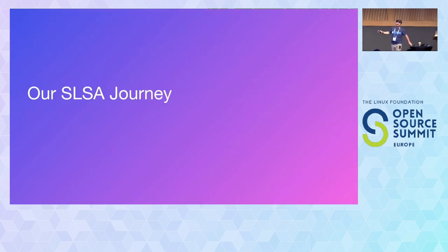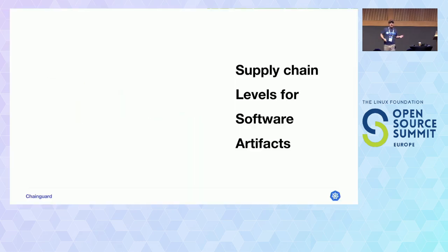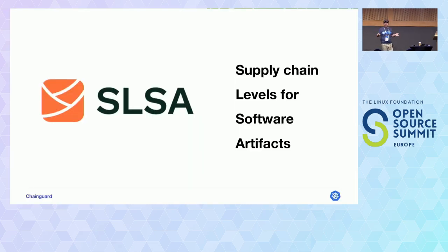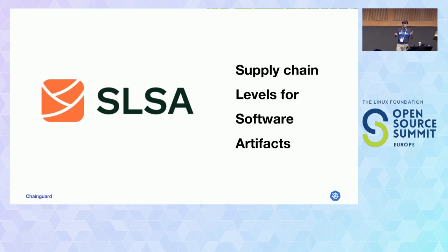I want to give you an overview of how we are trying to build better SLSA compliance in Kubernetes. SLSA — Supply Chain Levels for Software Artifacts — is a framework that helps you do gradual steps to harden your release processes. It gives you information and assurances that the artifacts you're putting out have been built in a secure environment.